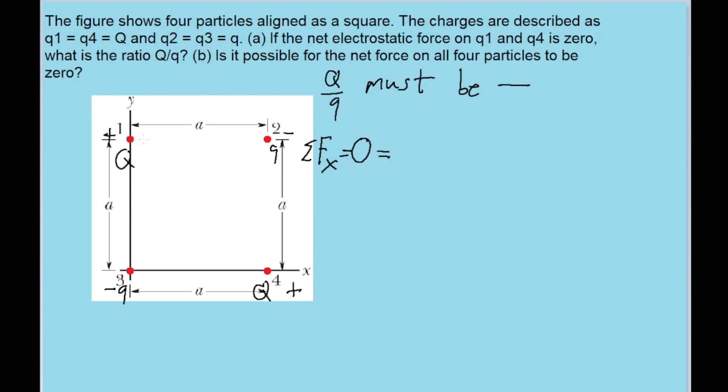From charge two, charge one will be feeling an attractive force in the positive horizontal direction towards the right because of the fact that they have opposite charges and will be attracted towards each other. So this component of the force is going to be equal to, and I'm applying Coulomb's law here, the Coulomb constant k times the charge on charge one, big Q, times the charge on charge two, the little q, divided by a, the side length of the square which is the distance between the two charges, and that a is squared as per the inverse square law.